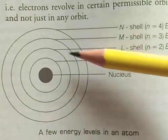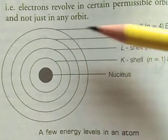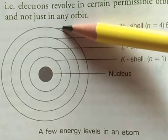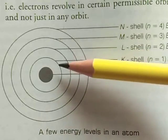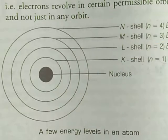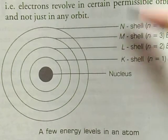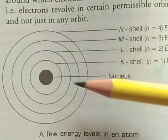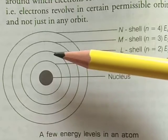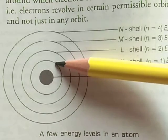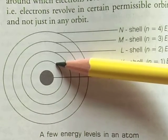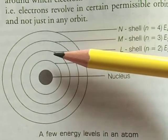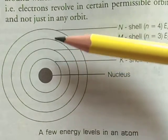This is K shell, L shell, M shell, or N shell — meaning first, second, third, and fourth energy levels. These are also called orbits. The electrons present in the first energy level have the lowest energy. Energy increases on going towards the outer energy levels.